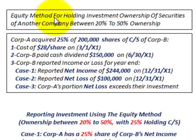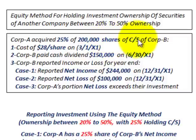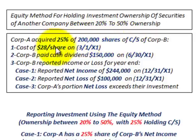We're going to be going over the equity method for holding an investment — ownership of securities of another company — where you own between 20 to 50 percent of the other company. For example, Corporation A acquired 25 percent of the 200,000 shares of common stock of Corporation B, giving Corporation A a 25 percent ownership in Corporation B. They paid $28 per share.